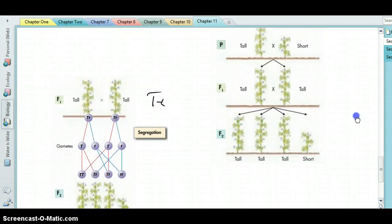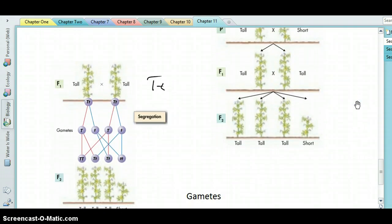So the law of segregation states that when this individual is going to make gametes, each of those gametes only gets one copy of each gene. So while the parent has two copies of the T gene, the gametes they make, as we see here, only get one copy. They either get a big T or a little t.